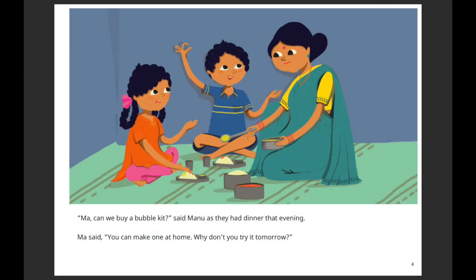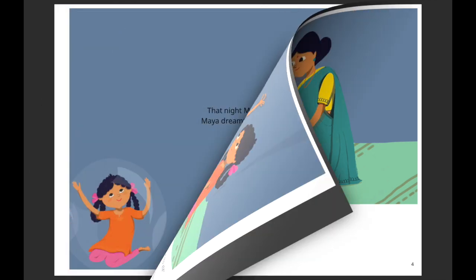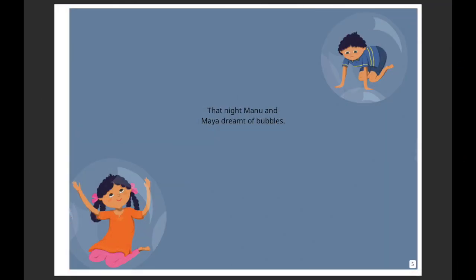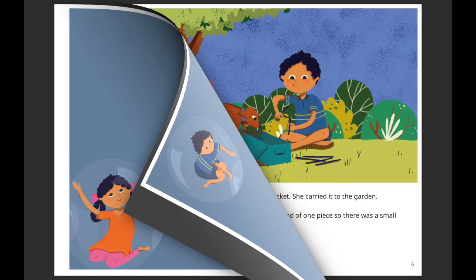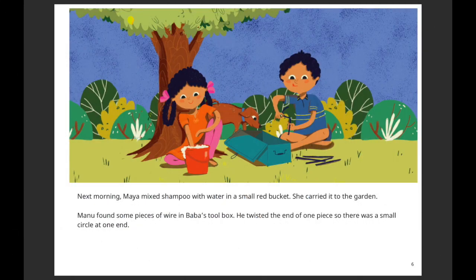'Ma, can we buy a bubble kit?' said Manu as they had dinner that evening. Ma said, 'Oh, you can make one at home — why don't you try tomorrow?' That night, Manu and Maya dreamt of bubbles. Next morning, Maya mixed shampoo with water in a small red bucket and carried it to the garden.